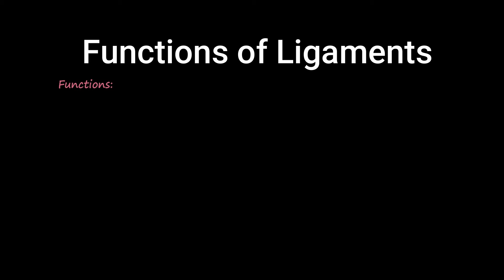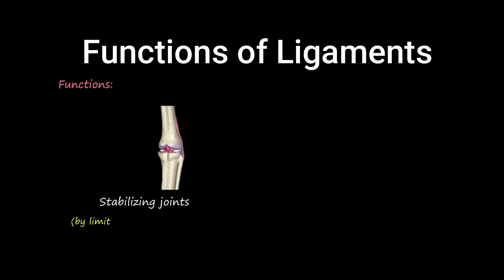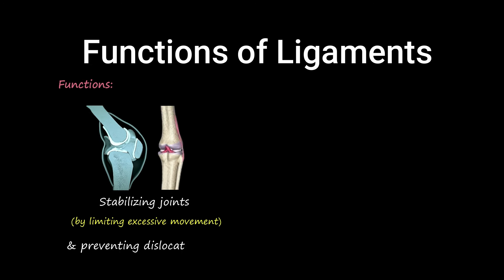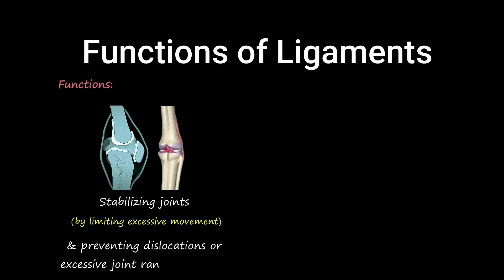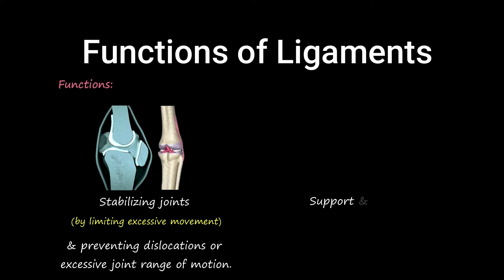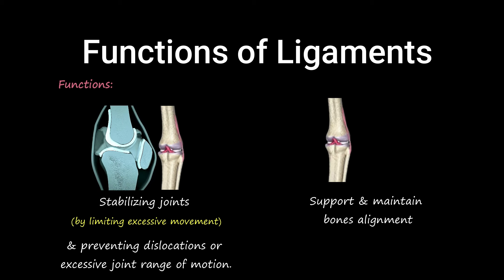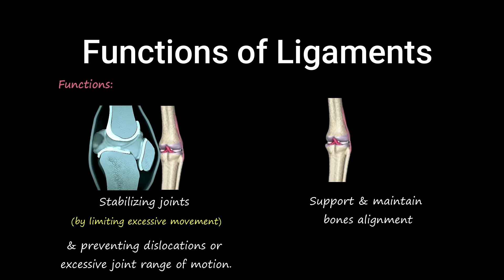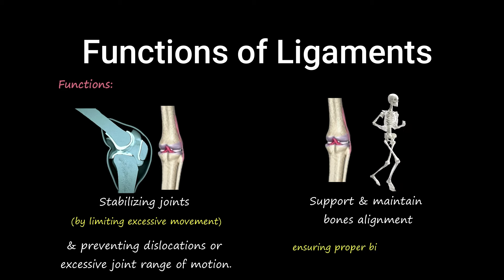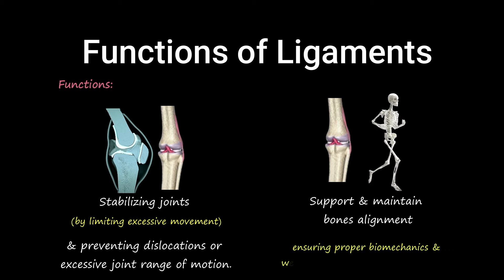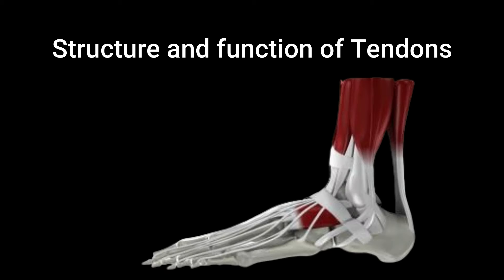They play a crucial role in stabilizing joints by limiting excessive movement and preventing dislocations or excessive joint range of motion. Ligaments help support and maintain the alignment of bones within a joint, ensuring proper biomechanics and weight distribution during movement.